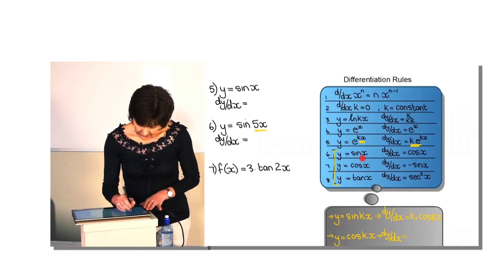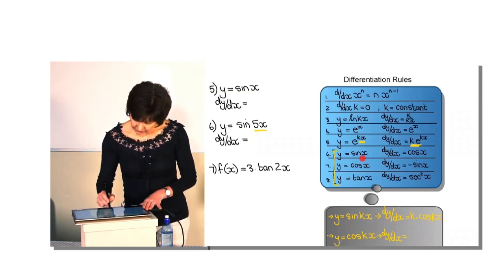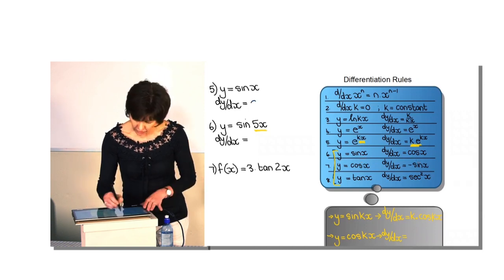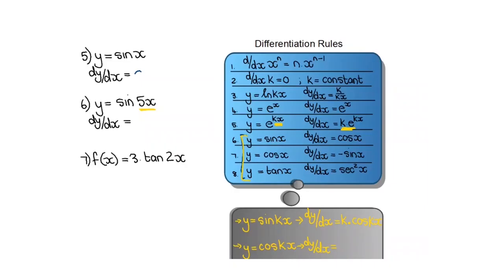So let's do the first example. The derivative of sin x — straightforward, I just use my formula sheet — is equal to cos x. But the derivative of sin(5x) will be: first remember the k value, which is 5, then go to the formula sheet and say sine's derivative is cos, giving 5 cos(5x).